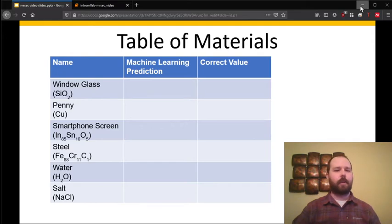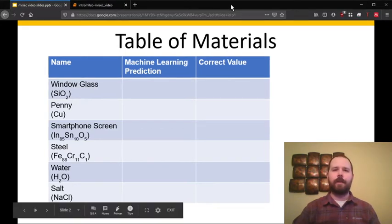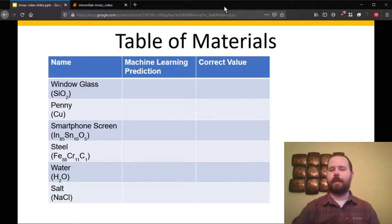So take a second to pause the video. If you want to write down your predictions you can grab a pencil and paper and you can construct this same table and come up with your own predictions. And then once you have those you can move on to the next section and we'll look at how we made those predictions and how the machine learning model is going to make those predictions.